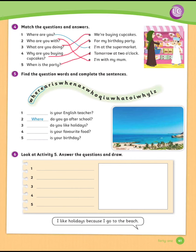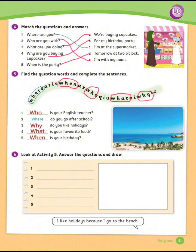Exercise number 5: Find the question words and complete the sentences. We have: where, when, who, what, why. Now let's complete the sentences. Number 1: Who's your English teacher? Number 2: Where do you go after school? Number 3: Why do you like holidays? Number 4: What is your favorite food? Number 5: When is your birthday?